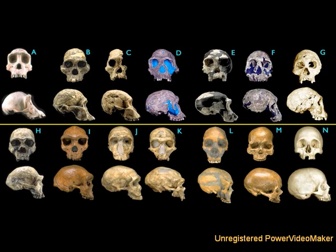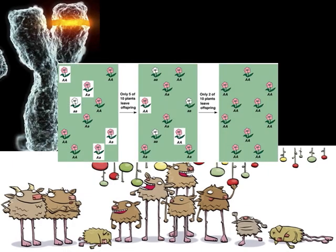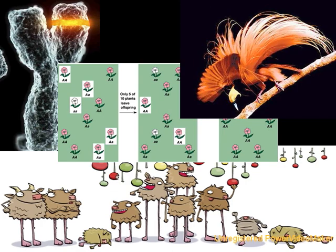Therefore it is a fact that species evolve. Evolution is a fact when describing what happened. It's the theory of evolution that seeks to explain how things happened — how do species evolve? The theory of evolution includes genetic mutations, natural selection, genetic drift, and sexual selection as mechanisms for the observed instances of evolution.